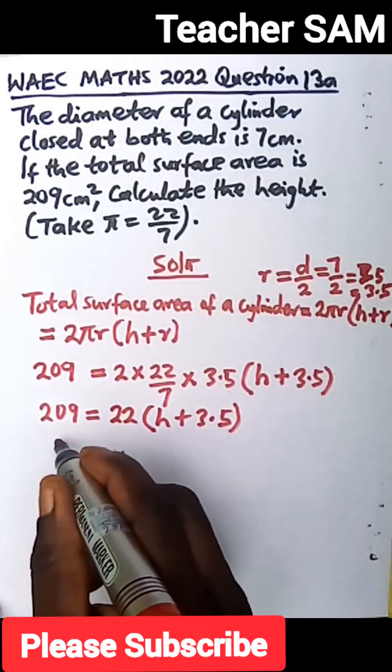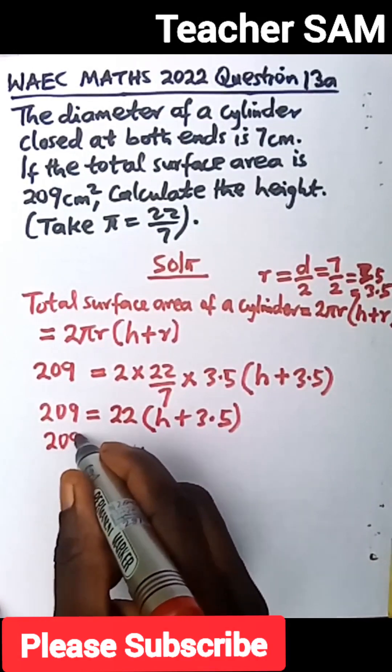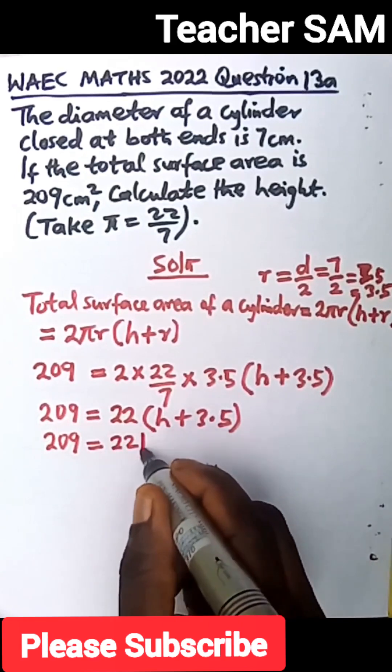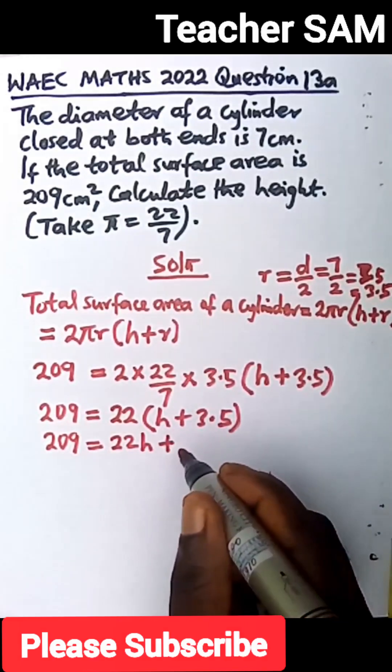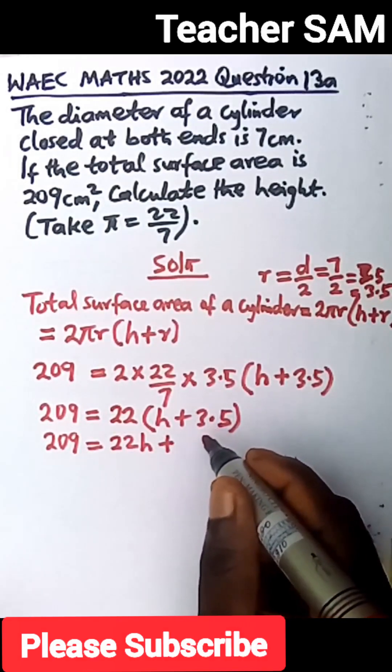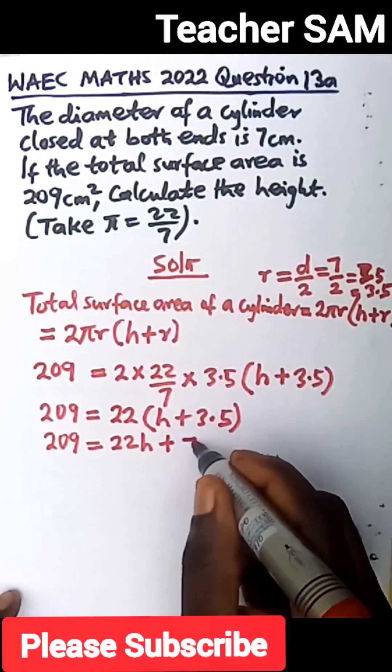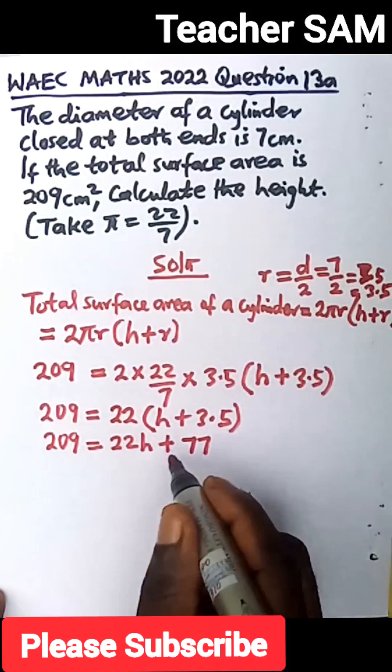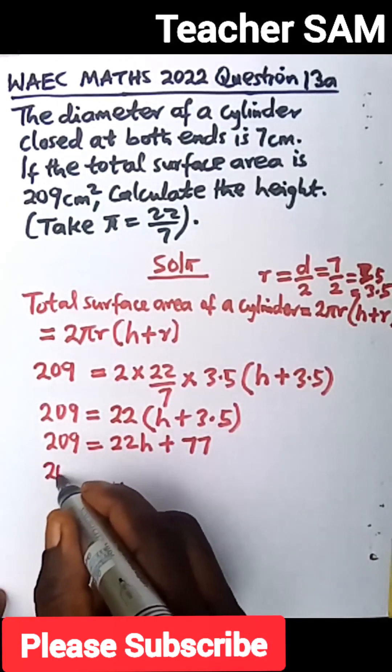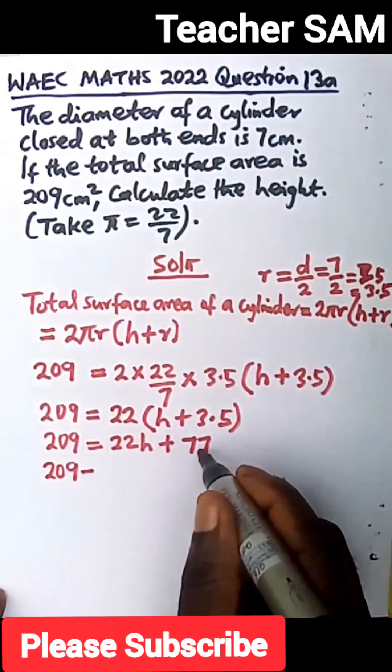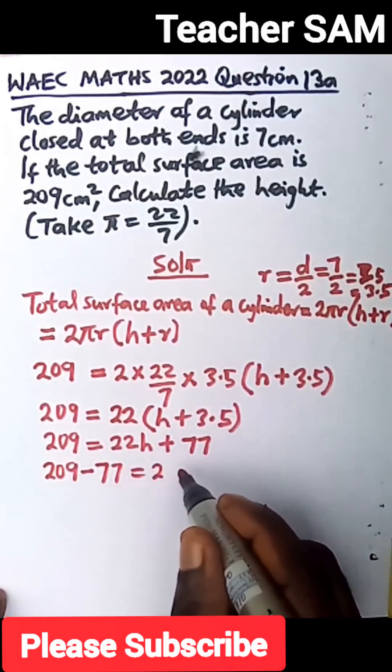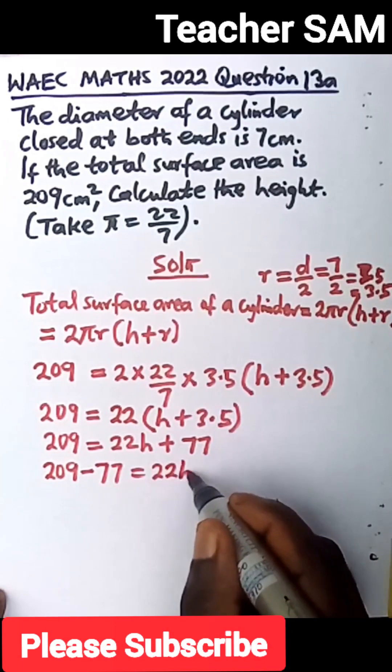We just clear this bracket. 209 equals 22 times height. We have 22h plus 22 times 3.5. We have 77. Now we move this over to the side. We have 209 minus 77 equals 22h.